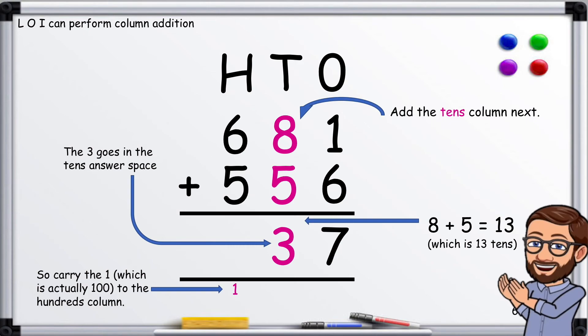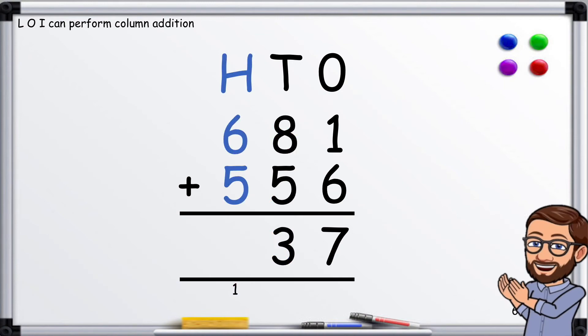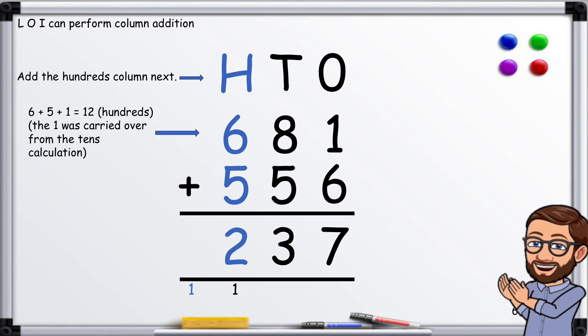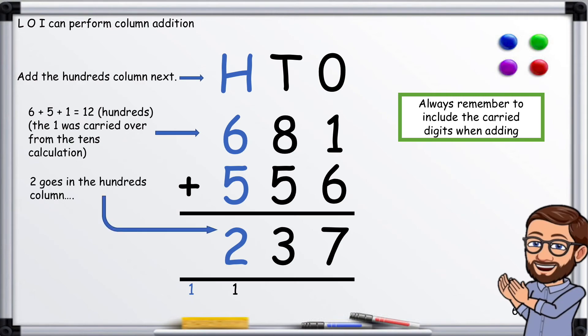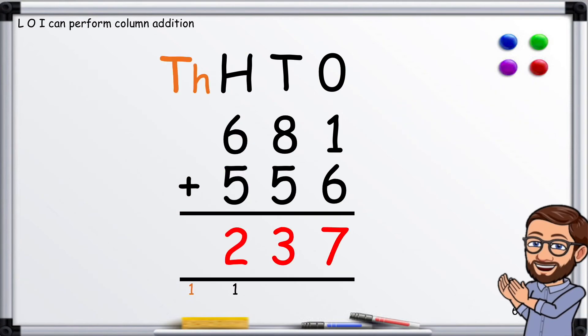Next we add up the hundreds column: 6 plus 5 plus the 1 we have carried, which is at the bottom there, equals 12. Always remember to include the carried digits when adding. The 2 goes in the hundreds column and the 1 goes in the thousands column. Now we complete the calculation.